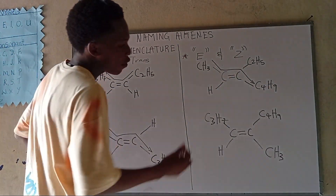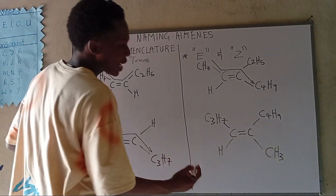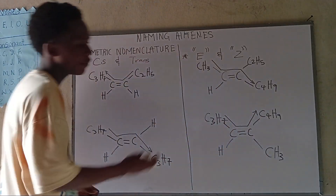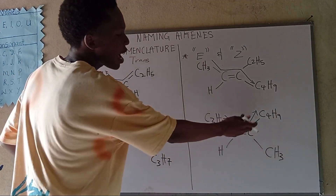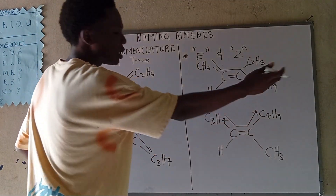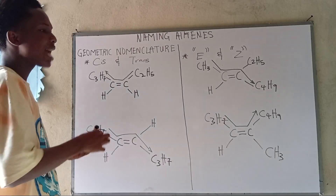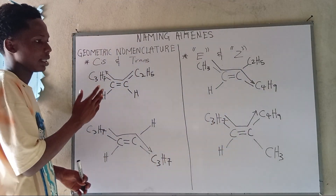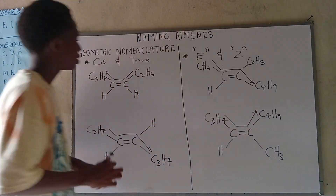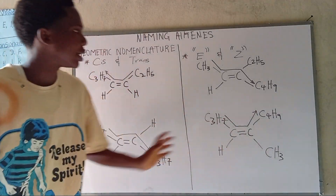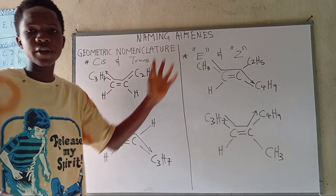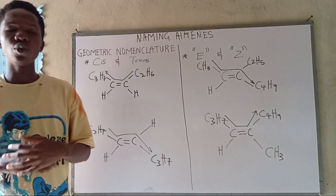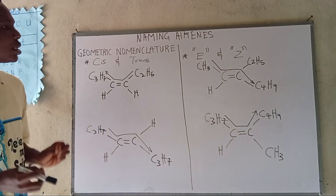The longest carbon chain goes like this: one, two, three, four, five, six, seven, eight, nine. When the longest chains on each carbon of the double bond are on opposite sides, that is E — the alternate of trans. When the longest chains are on the same side, that is Z — the alternate of cis.